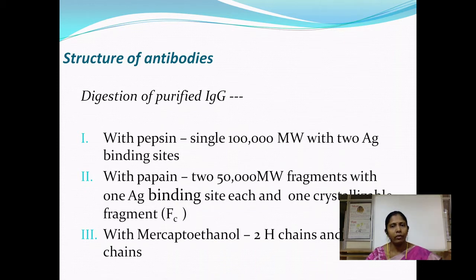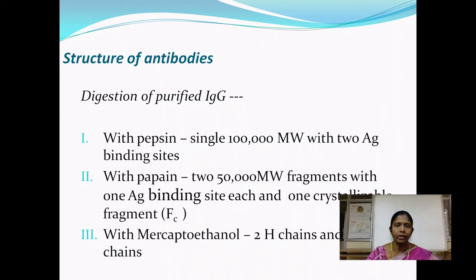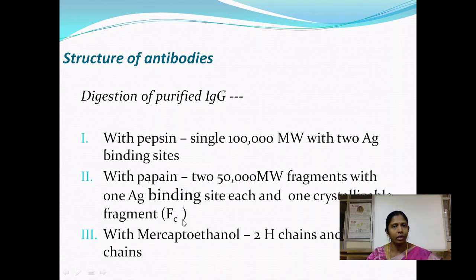Along with the two antigen binding fragments, one heavier crystallizable fragment was also obtained. So digestion of purified IgG fraction with papain results in three fragments — two with antigen binding ability and one which is crystallizable. That crystallizable fragment was designated as the Fc fragment (Fragment crystallizable), and the two antigen binding fragments were designated as Fab (Fragment antigen binding).